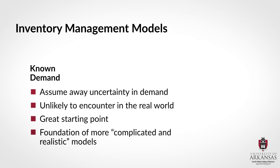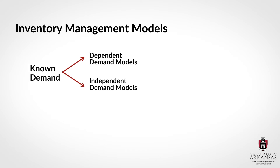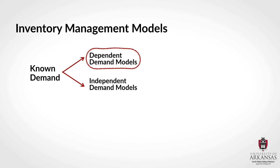When it comes to known demand models, we will differentiate between two key groups: dependent demand models and independent demand models. Dependent demand models apply, for example, when we seek to make ordering decisions for distribution centers whose inventory requirements depend on demand levels at the retail outlets they serve. We call this distribution requirements planning, or DRP, and we will talk more about this particular dependent demand model in a separate lecture.